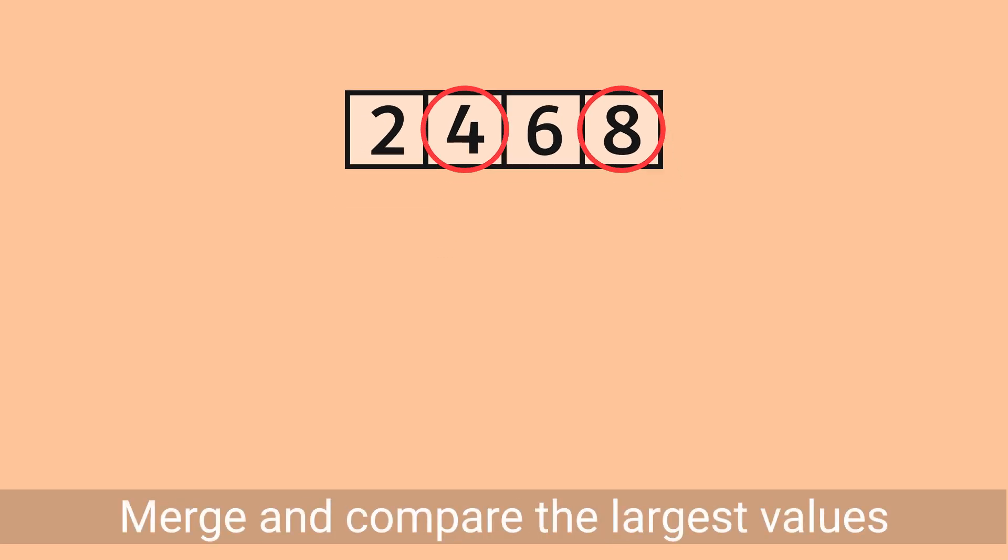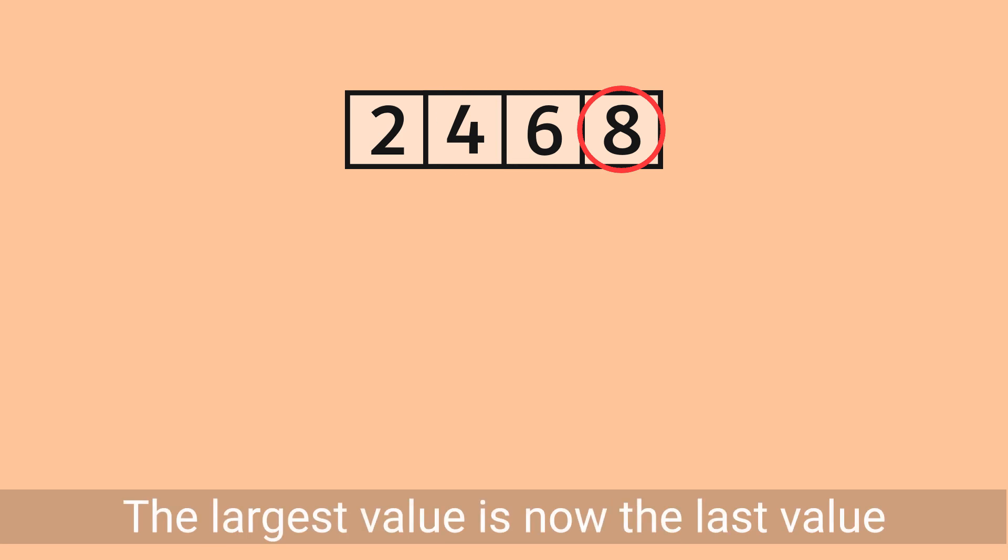Since these lists are so small, they are in another special case where this swap already sorts them. So, we can move on. Merge and compare the largest values. The largest value is now the last value in this original sublist.